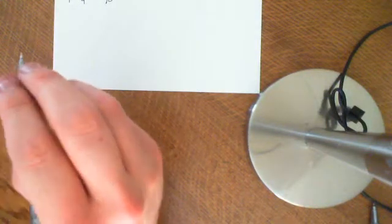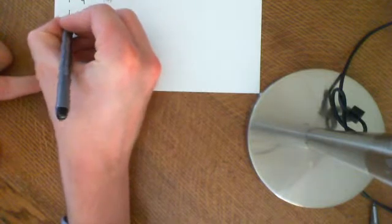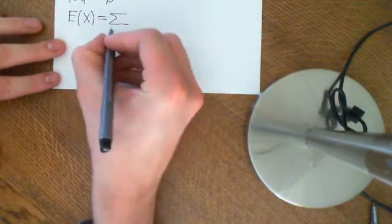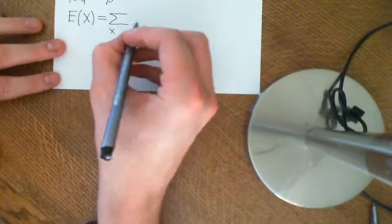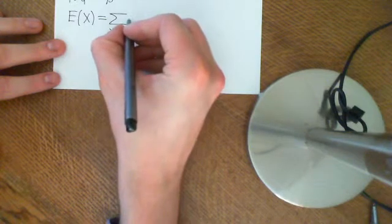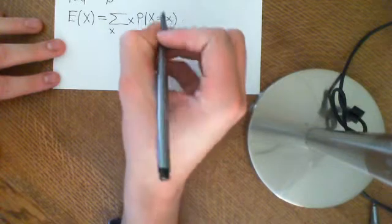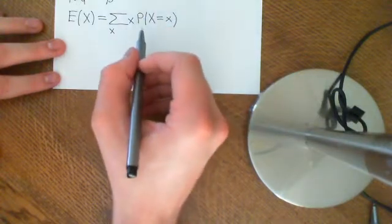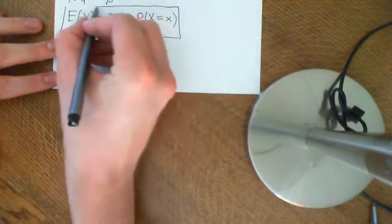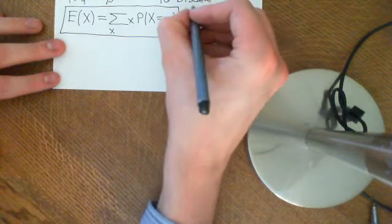In this next video in the probability series, we're going to define the concept of the expectation value of a random variable. Firstly, let's have the definition. The expected value of a random variable X is equal to the sum over all values that X can take — over all little x such that x is a value that the random variable takes — times the value little x times the probability that little x occurs. So, the probability that X is equal to little x. This definition works only for discrete random variables; we will generalise it later to continuous random variables.